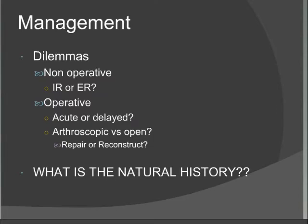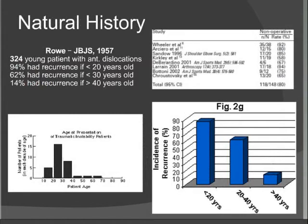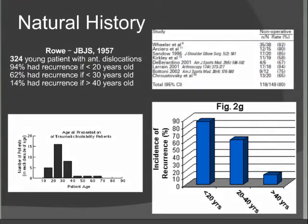Looking at the age of presentation of traumatic instability, the highest number of presentations is in the 20 to 30 age group, with some in the 30 to 40 group. The difference in outcomes between the 10-to-20 and 30-to-40 age groups is very large. One of the earliest studies by Rowe in JBJS in 1957 looked at 324 young patients with anterior dislocations and found 94% recurrence in patients under age 20, 62% in those under 30, and 14% for those over 40. Age dramatically changes the way you treat these injuries.